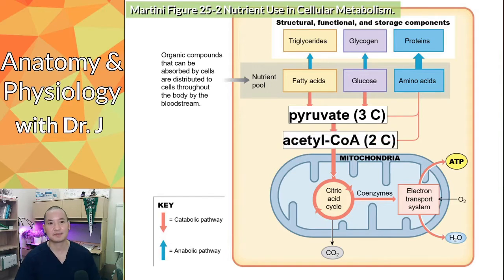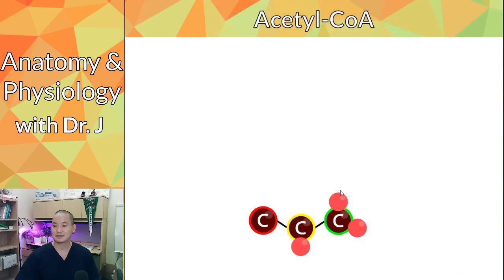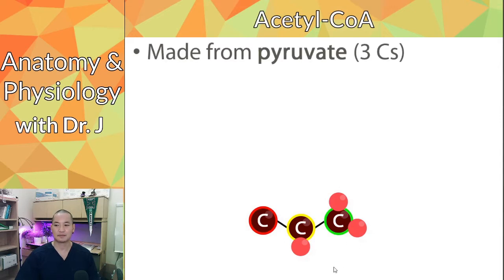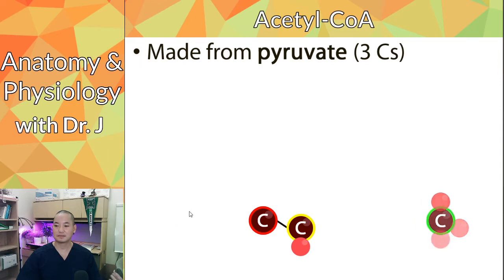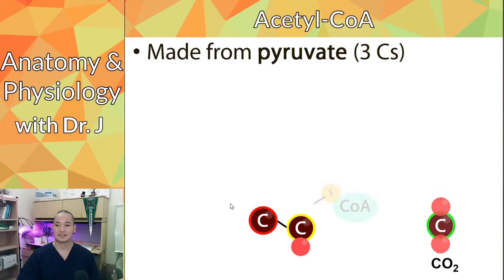Acetyl-CoA will come up multiple times in future lectures. Pyruvate has three carbons, and when you separate one of the carbons and lose it as carbon dioxide, now you have a molecule with two carbons — and this is acetyl-CoA.